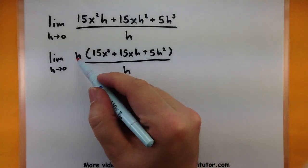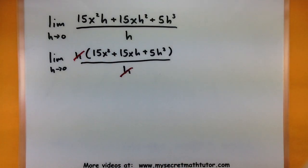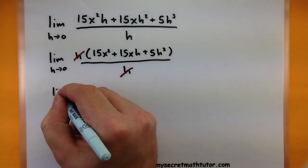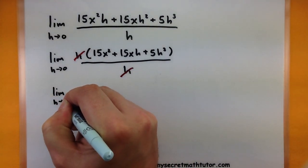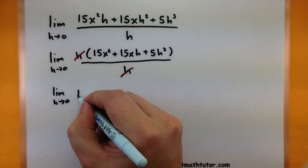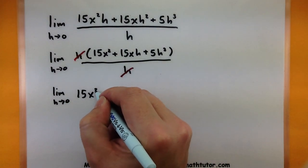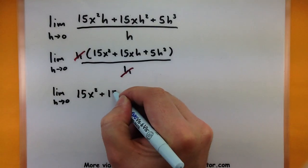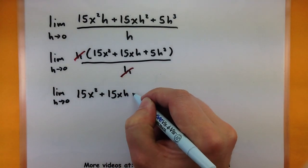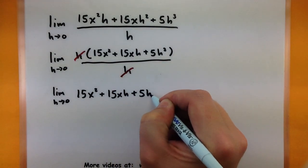So now I can see that this h will cancel in the top and in the bottom. So what are we really taking the limit of now? The limit as h goes to zero of 15x squared plus 15x h plus 5h squared.